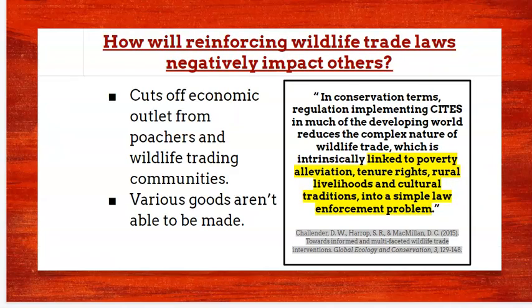In slide number ten, the group attempts to score points by discussing the implications of their proposed solution — how will adopting their solution impact various stakeholders? But this discussion is cursory at best. If the group had connected the claims in the bullet points to research using parenthetical citations, which visually connects claims to academic research, they could have scored just a little bit better.